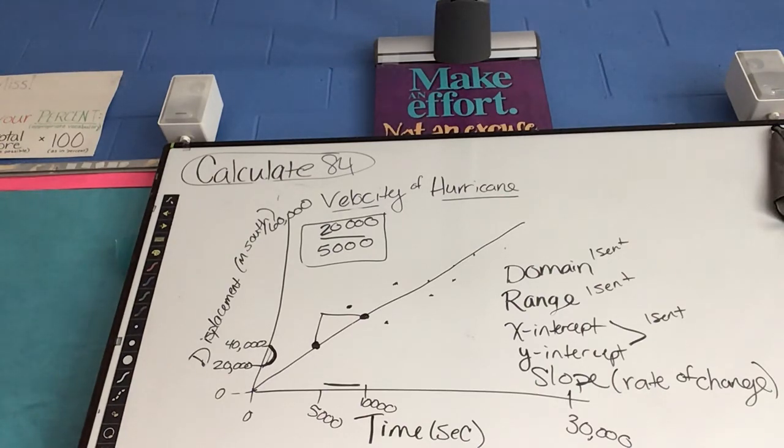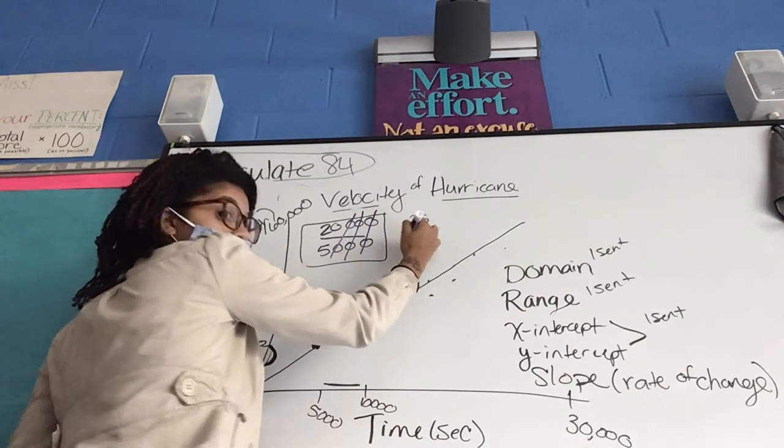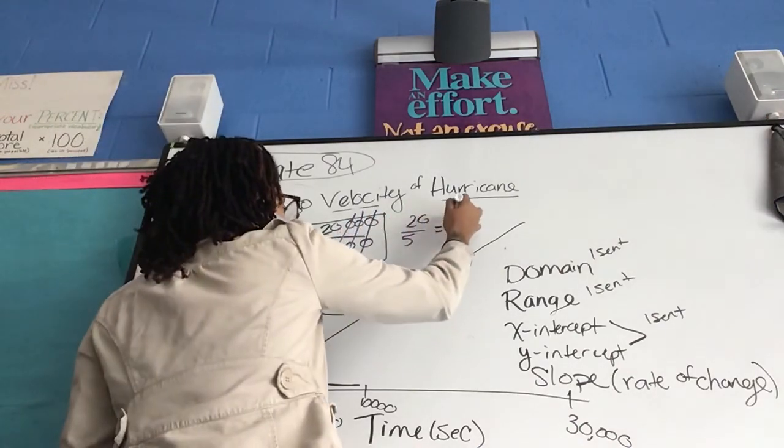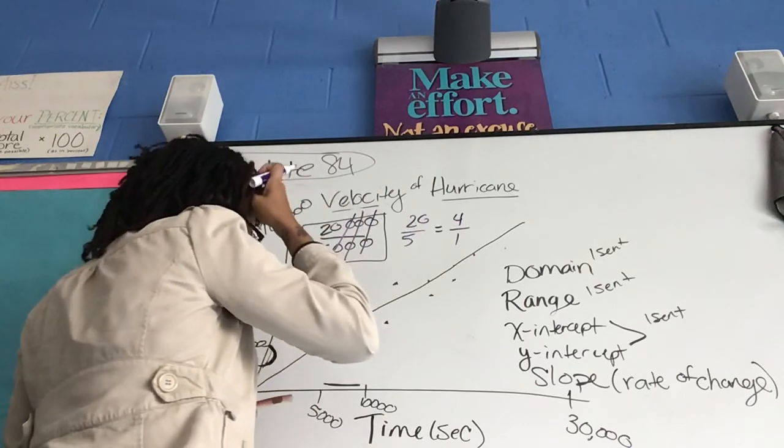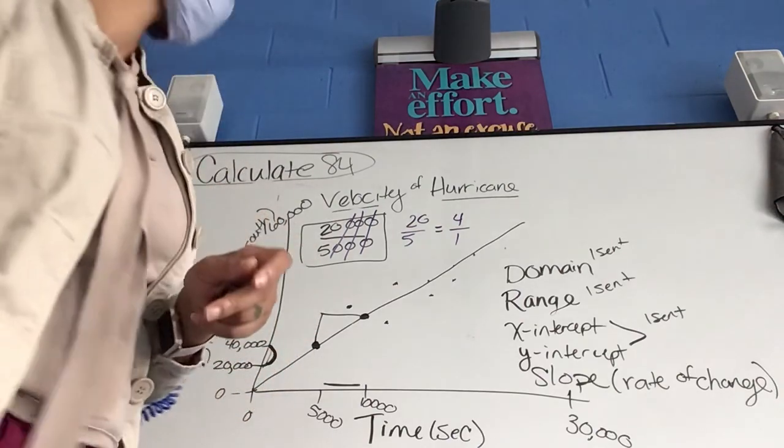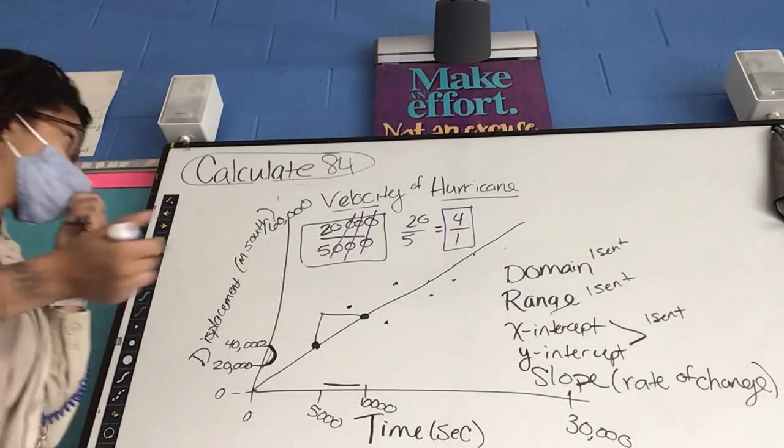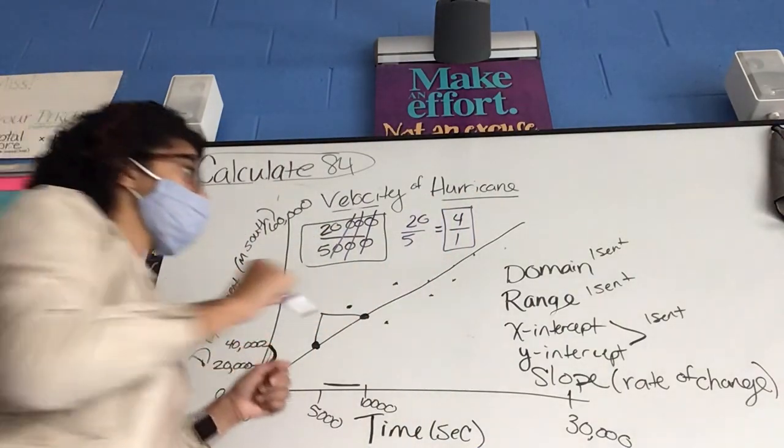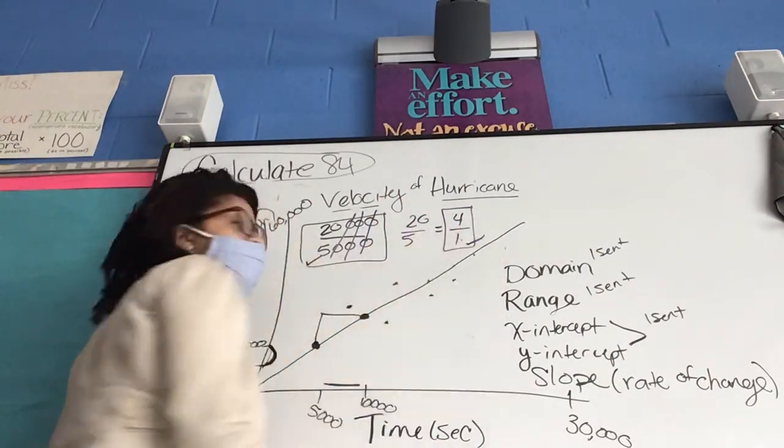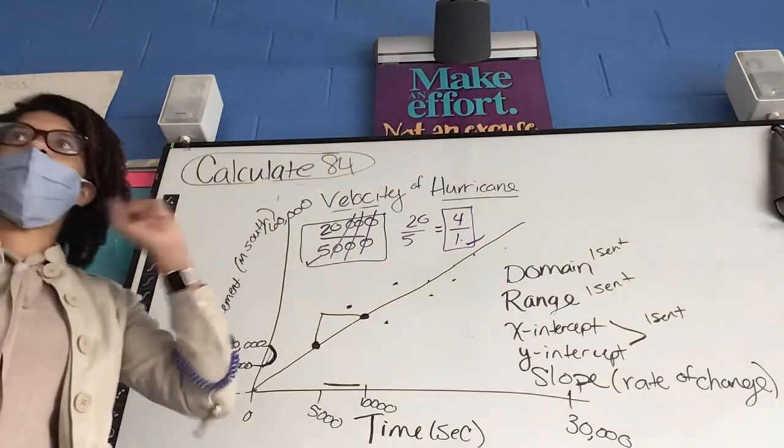Now if you wanted to, you could simplify this. Cancel out those zeros, and I'll have 20 over 5, my son's going to call me 75 times. Yes, Deuce. What? Can you let me text me? Just say text me on my way, I'm in class. So if I simplify that, I can say for every 4 meters south, my displacement happened one second. Again, I take this answer just as much as I take that answer. Neither one is wrong for me, because in real life, it doesn't really matter what you use.